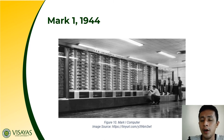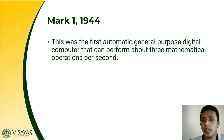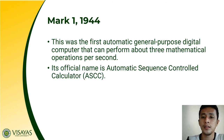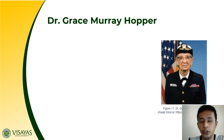In the year 1944, Mark I was released. It was the first automatic general-purpose digital computer, which can perform about three mathematical operations per second — now faster and more advanced compared to previous inventions. Its official name is Automatic Sequence Controlled Calculator, or ASCC, and it was developed at Harvard University by Howard Aiken with his graduate students and engineers from IBM.